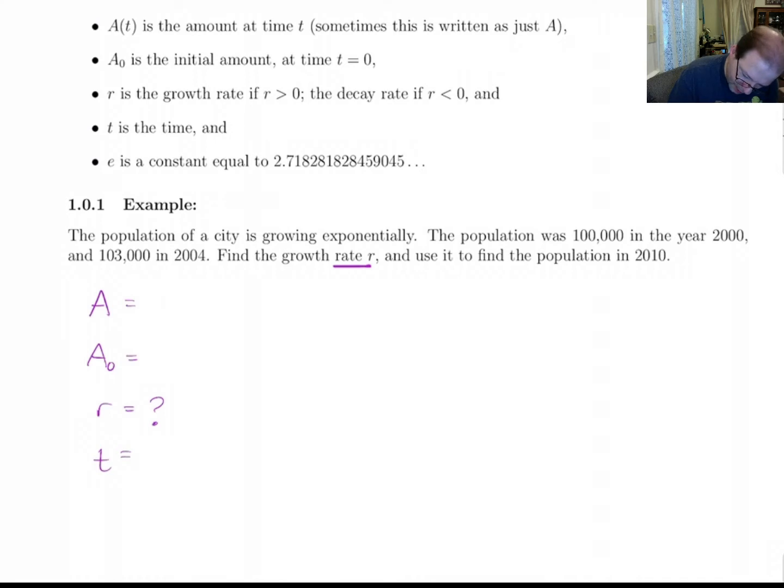So our A is in 2004, A is 103,000. And A sub 0, that's what we started at, was 100,000. And t, we've got to look at this and see what they're saying. Going from 2000 to 2004, that's four years that have elapsed.